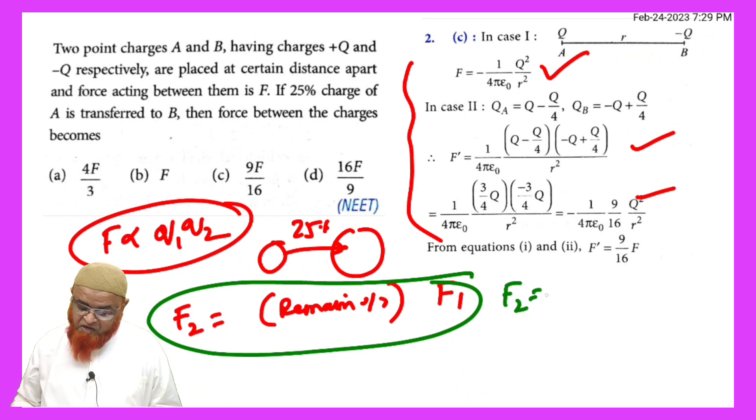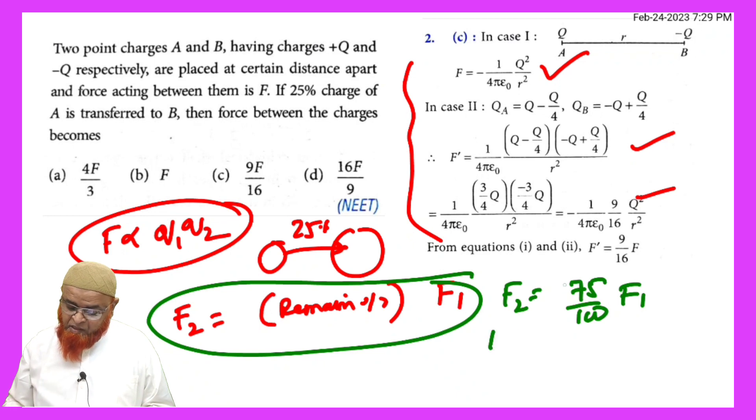You can write now, F2 is equal to remaining percent. If 25% is transferred to the other charge, then the remaining is 75%. So that is 75 by 100 into F1. And that is going to be whole square. You have to do whole square also. That is the method here.